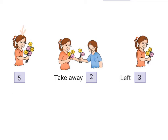Gita has how many flowers in her hand? Let's count. 1, 2, 3, 4, 5. So Gita has 5 flowers in her hand. Her friend Sita takes away how many flowers? 1, 2. So her friend Sita takes away 2 flowers.